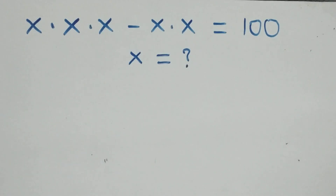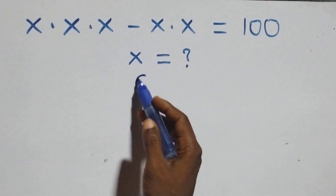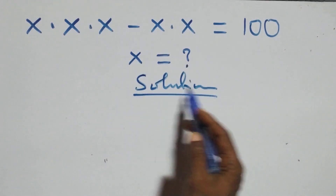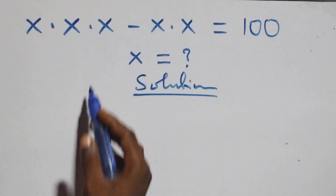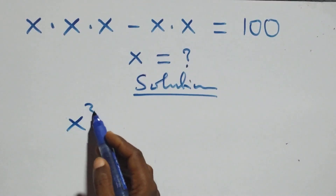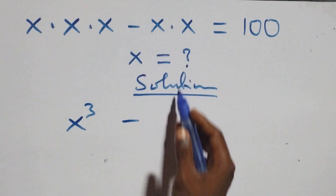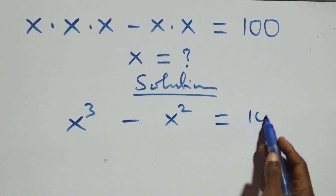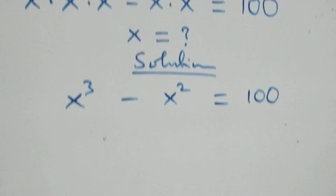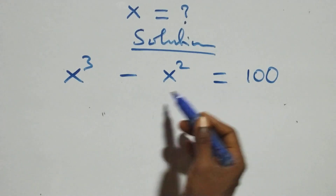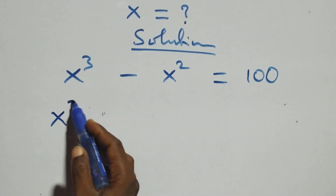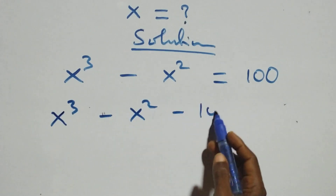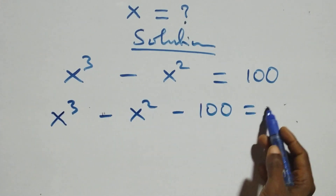Hello, you are welcome. How to solve this nice algebraic equation. What we have here, we write it as x times x times x, which is x raised to the power 3, minus x times x plus x squared equals to 100. From here we take 100 to the left hand side, this becomes x raised to the power 3 minus x raised to the power 2 minus 100 equals to 0.